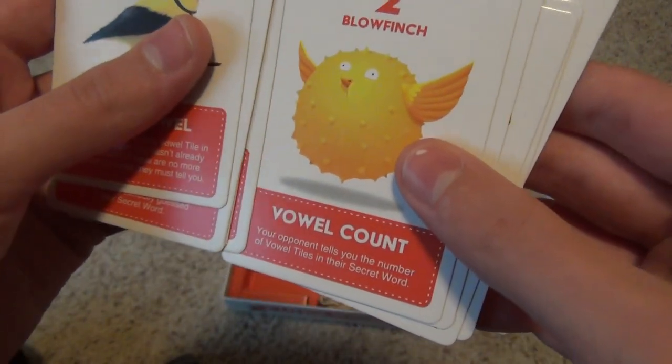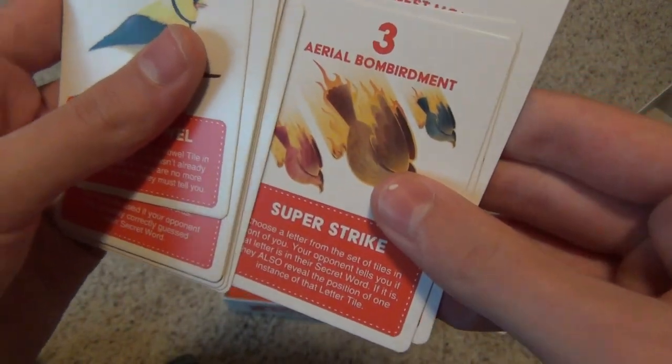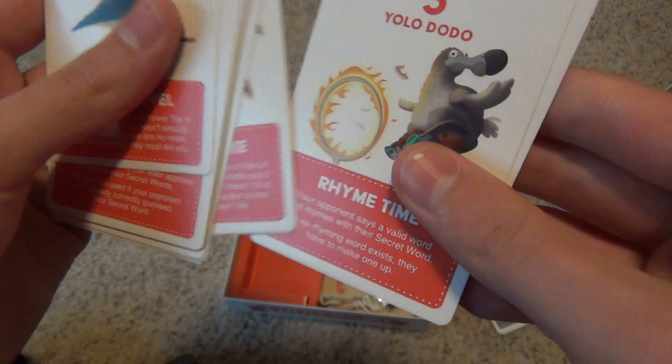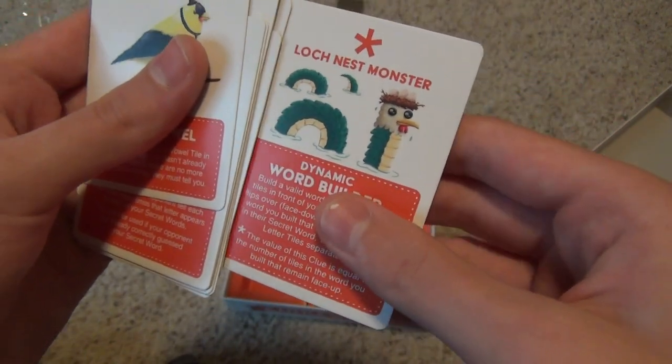Two bow flinch, vowel count. Three raven raven, consonant count. Three aerial bombardment, super strike. Rhyme time. Five yolo dodo, and lock nest monster, dynamic word builder.